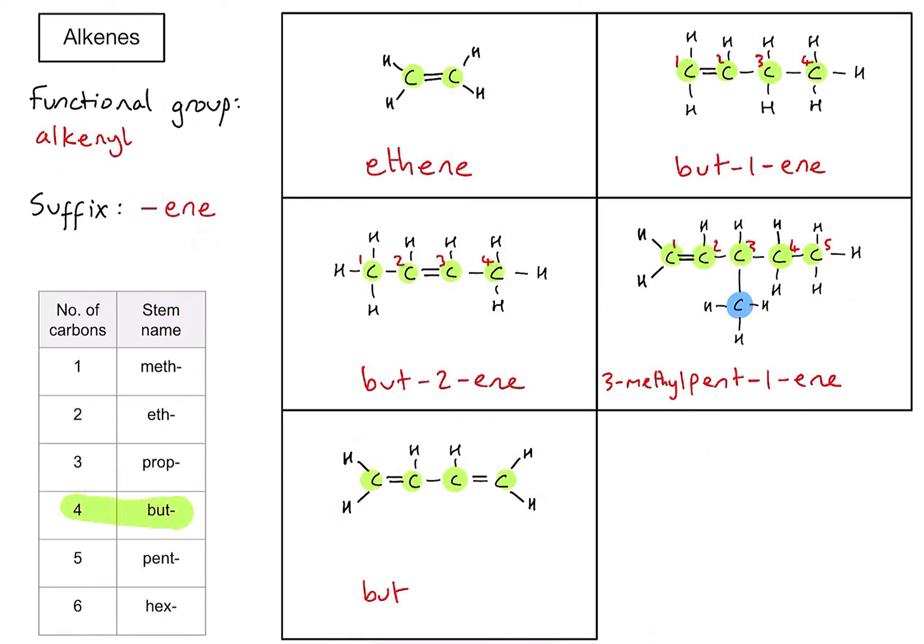And this time, again, let's label my carbons to identify where those double bonds begin. I've got one double bond starting on the first carbon, a second double bond starting on the third carbon. So I'm going to put but-1,3. And because there's two of those ene groups, I'm going to call it diene. And that just indicates that there are two double bonds in my molecule. That's about it for alkenes. Hopefully this video is of some help.